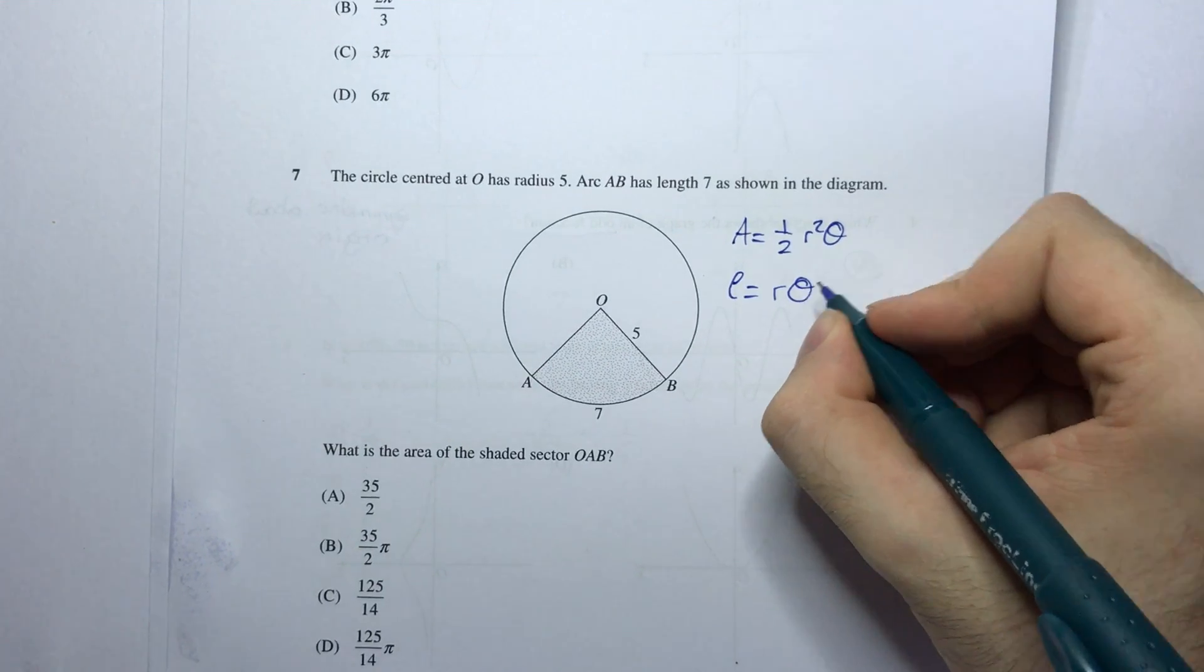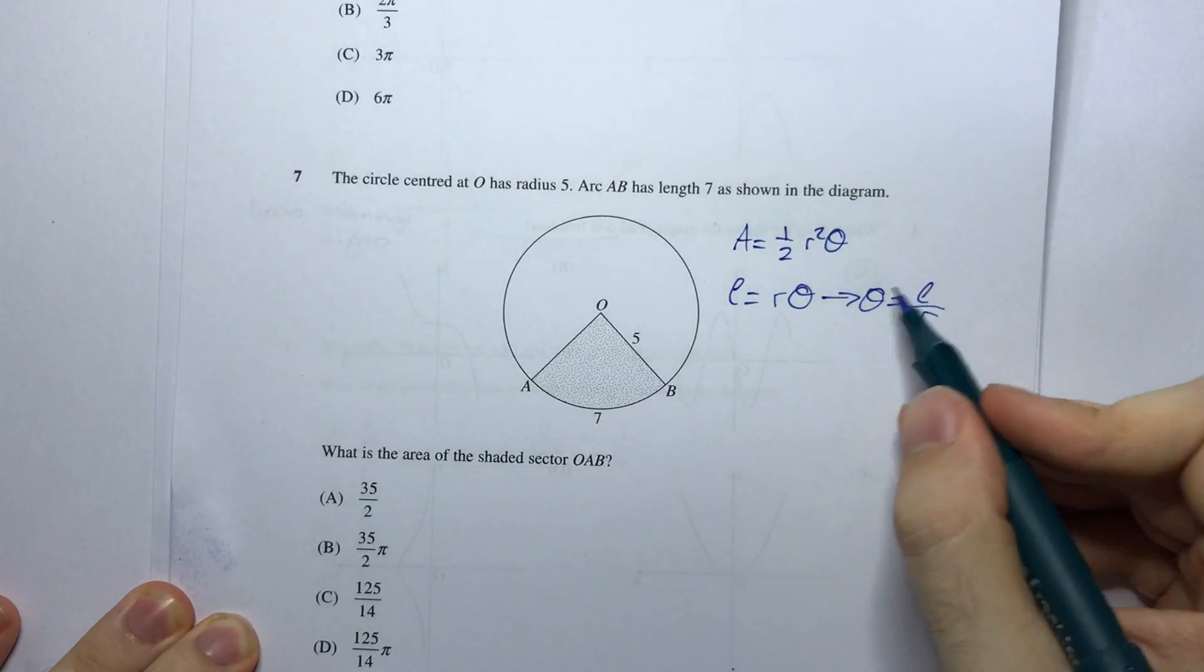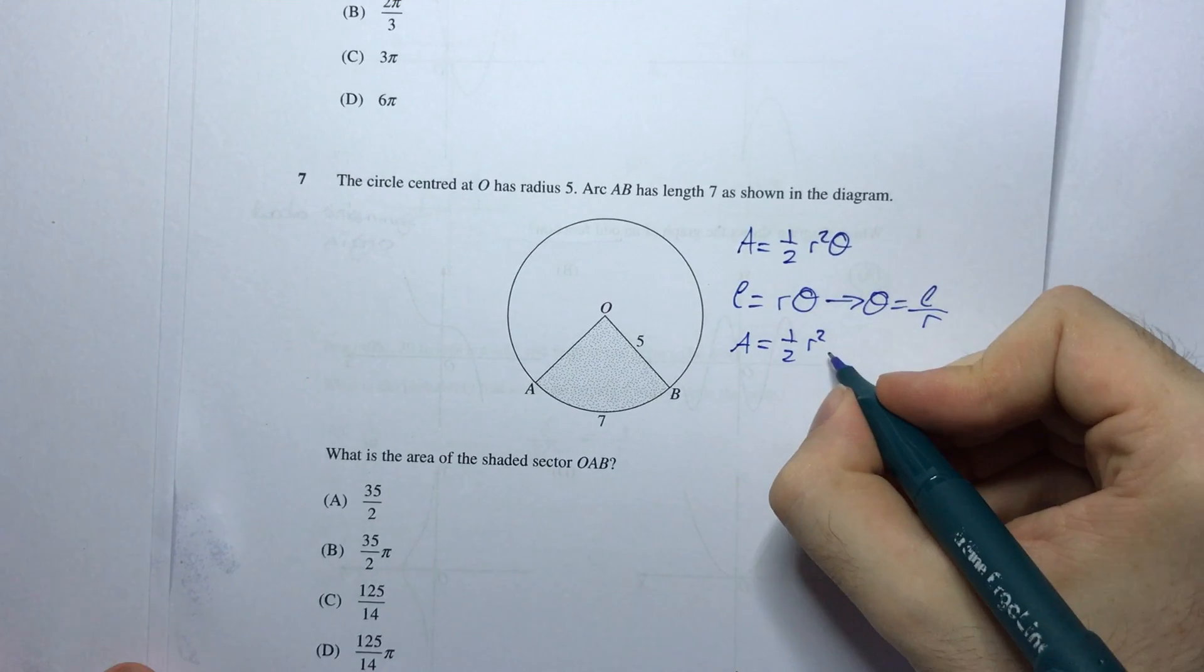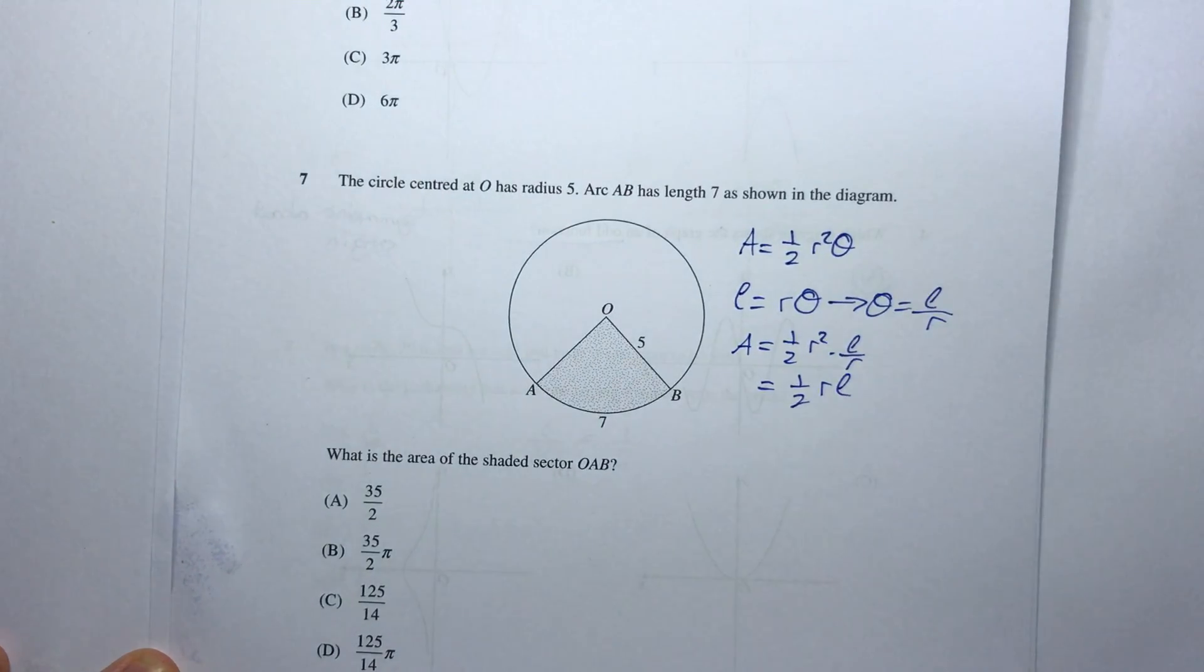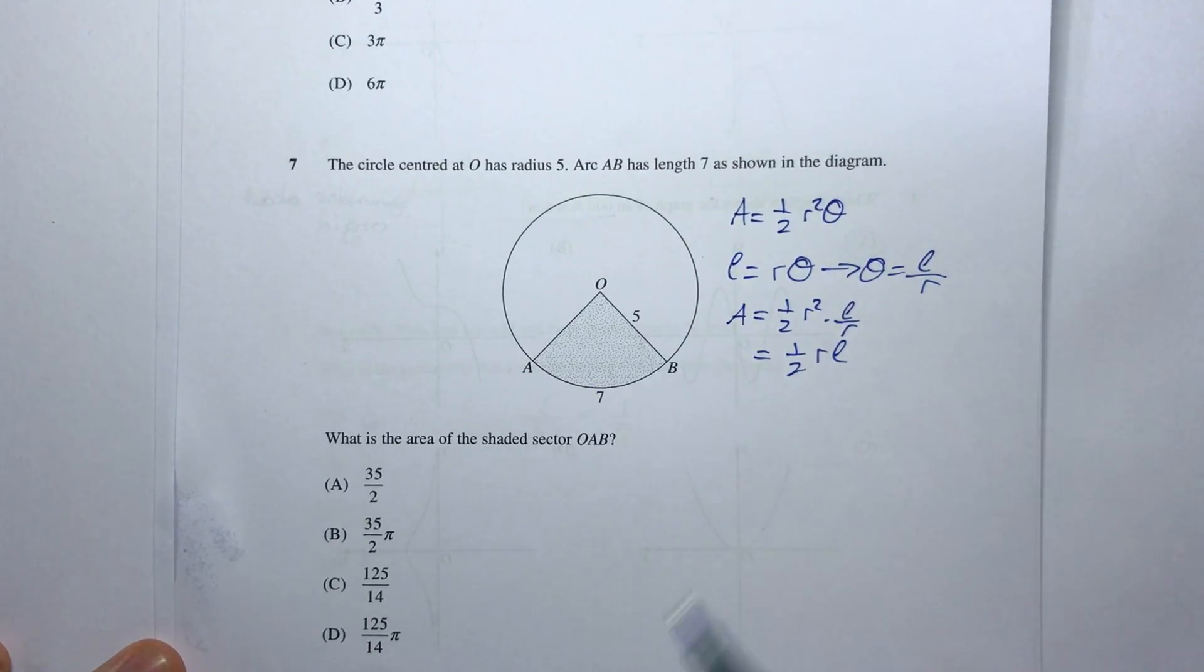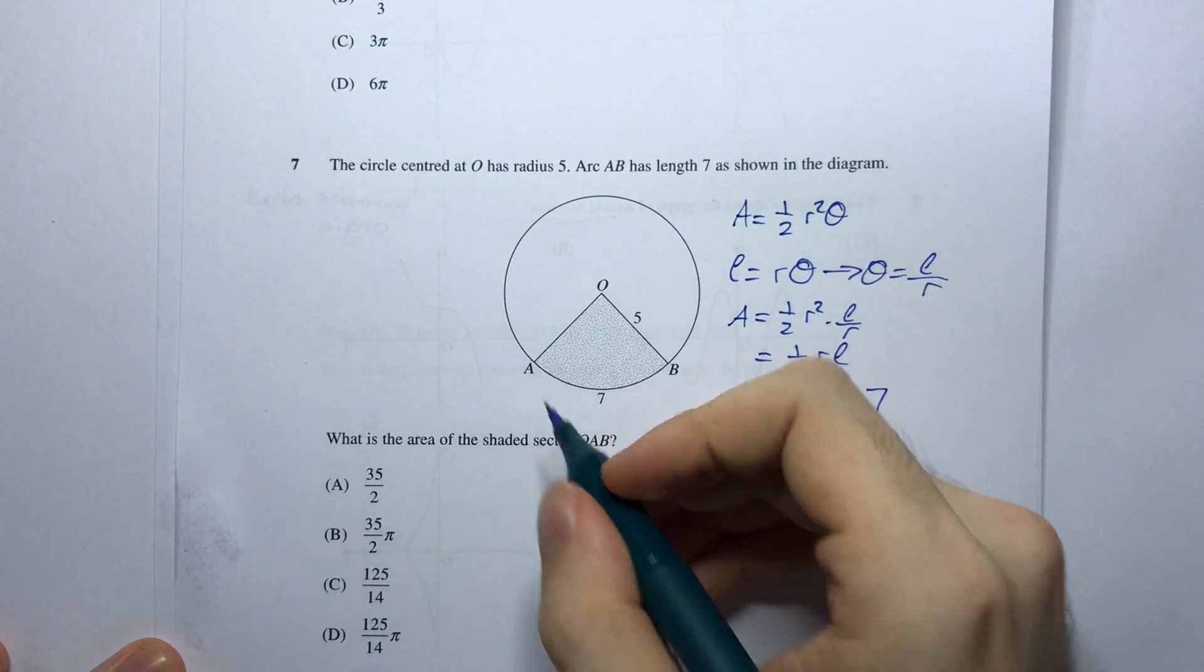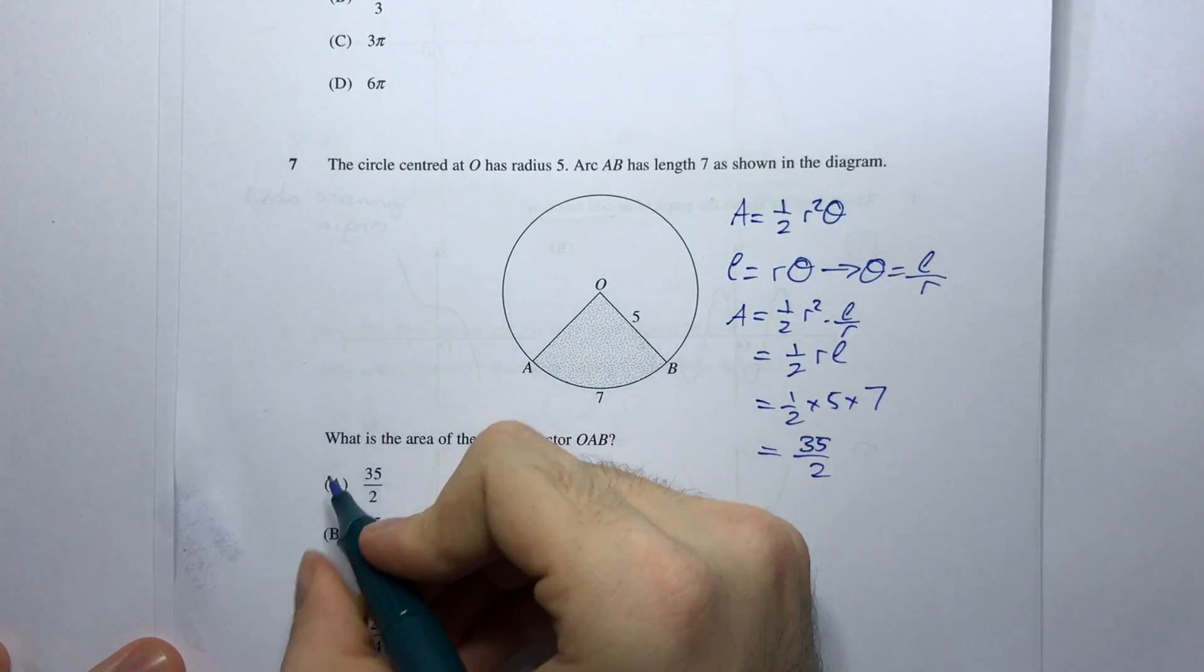So I can rewrite this formula as theta equals l over r, and then substitute that into this equation. And I have A equals a half r squared times l over r, which equals a half r l. And now I can substitute these values in because I know what my r is, that's 5, and I know what l is, that's 7, that's the length of the arc. So I have 35 divided by 2, and my answer is A.